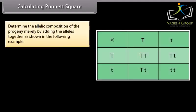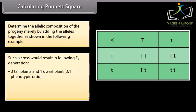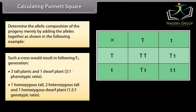Calculating the Punnett square. Determine the allelic composition of the progeny by adding the alleles together. Such a cross results in the following F2 generation: three tall plants and one dwarf plant — a 3:1 phenotypic ratio. Genotypic ratio: one homozygous tall (TT), two heterozygous tall (Tt), and one homozygous dwarf (tt) — a 1:2:1 genotypic ratio.